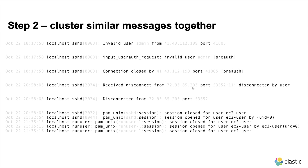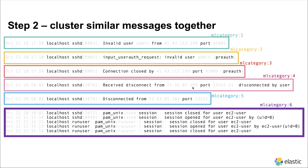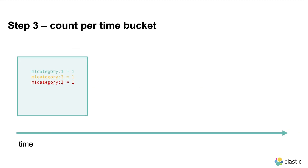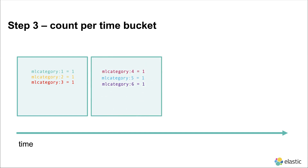If we look at this we can see that there are a variety of different categories that can exist here — some of which have just maybe one log line in that category, while others like category 6 can have several examples where the wording is just slightly different. Now since we have those categories identified, we can count them for every time interval. For example, in the first time bucket we may see one occurrence each of the first three category types, and in the second bucket one occurrence of categories 4, 5, and 6.